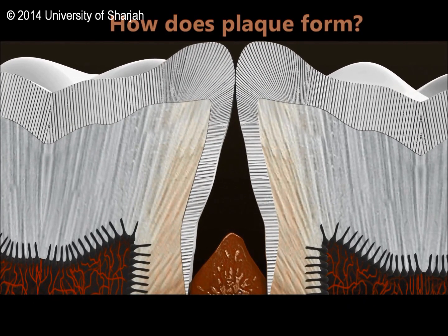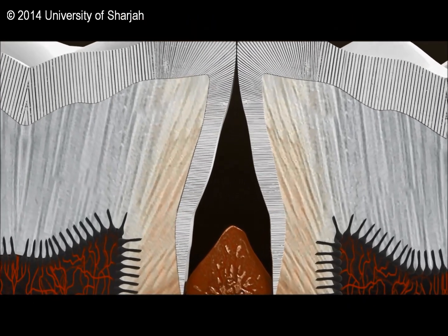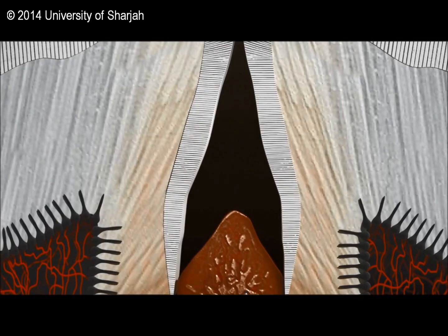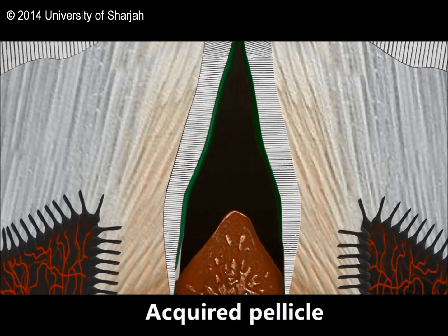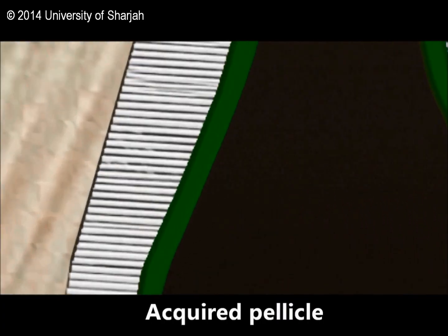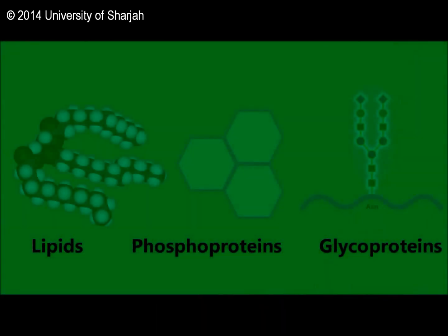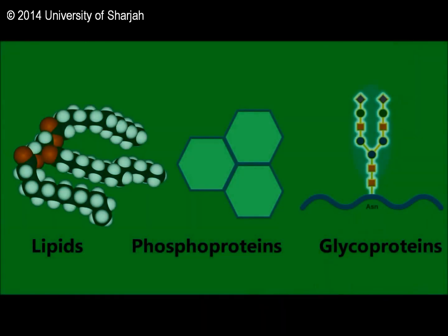Plaque formation begins with the formation of an acellular layer within minutes after tooth brushing, called the acquired pellicle. This layer consists of salivary glycoproteins, phosphoproteins, and lipids, but contains no bacteria.